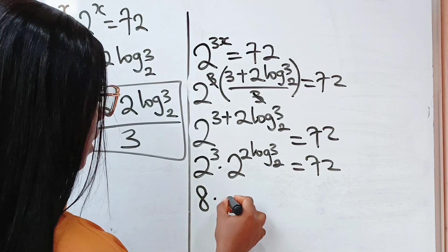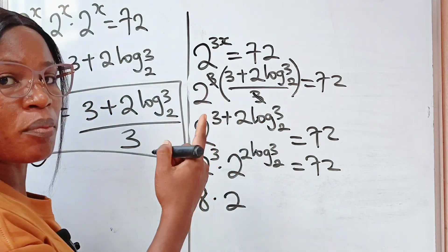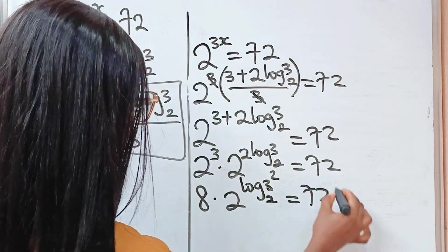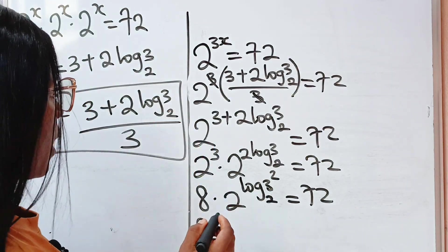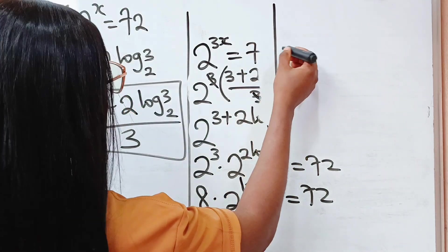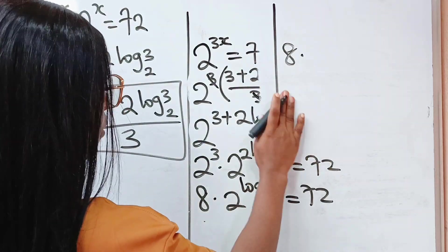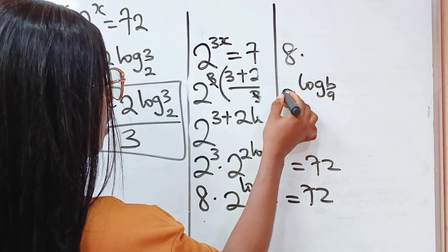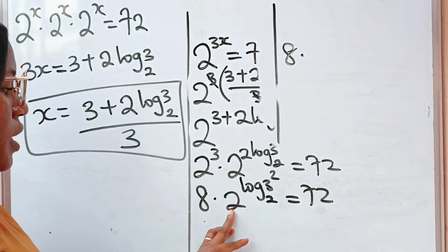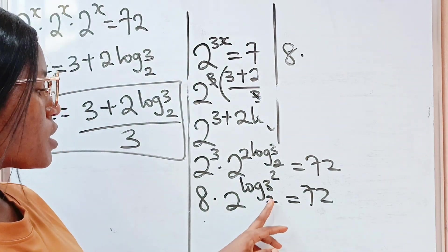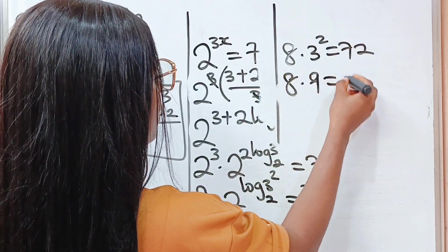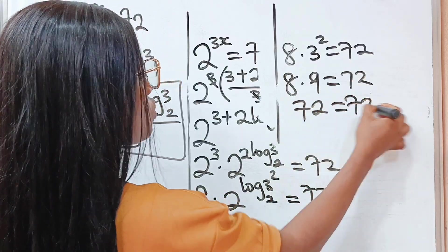Now, 2 to the power of 3 is 8. For the remaining term, using the power rule, the exponent 2 comes across to give us log 3 squared base 2, which equals 2. Now, when you have a raised to the power of log b base a, this is equal to b. Since the base and the log base are both 2, the whole term gives us 3 squared. So we have 8 multiplied by 9, which is 72, and that is right, because 72 equals 72.